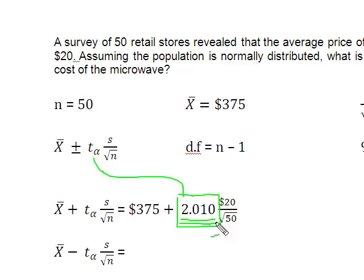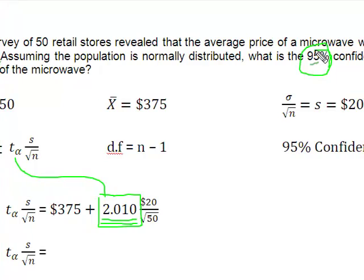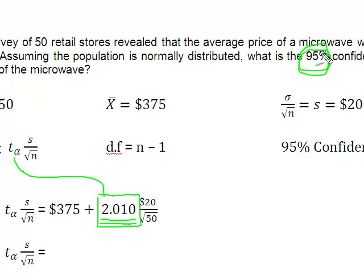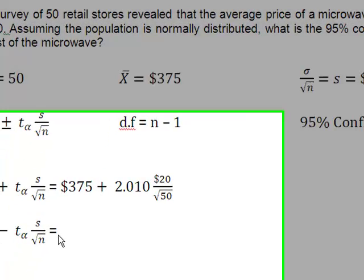So remember, reading this t-distribution, go across the top, across that top column, find your confidence interval, which is simply going to be given to you, however much it should be. Come down the chart until you get to the row that has your degrees of freedom on it, and drop that number right in.